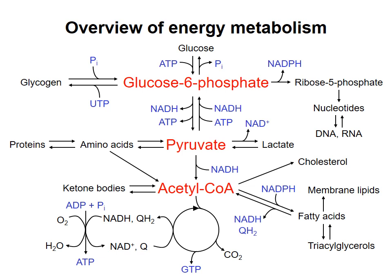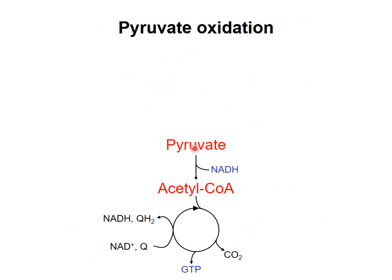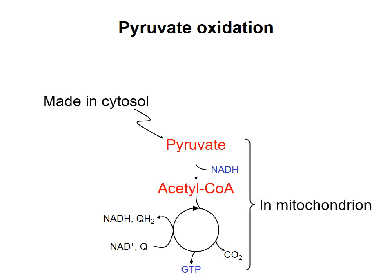In previous videos I've talked about carbohydrate metabolism, and what I want to do now is pick up on pyruvate and continue our study of metabolism by focusing on what happens to pyruvate, one of the products of glycolysis. Pyruvate has three carbons, and these carbons can be oxidized to carbon dioxide in the processes illustrated here. One thing to note is that pyruvate is synthesized in the cytosol in glycolysis, but the oxidation of pyruvate occurs in the mitochondrion.